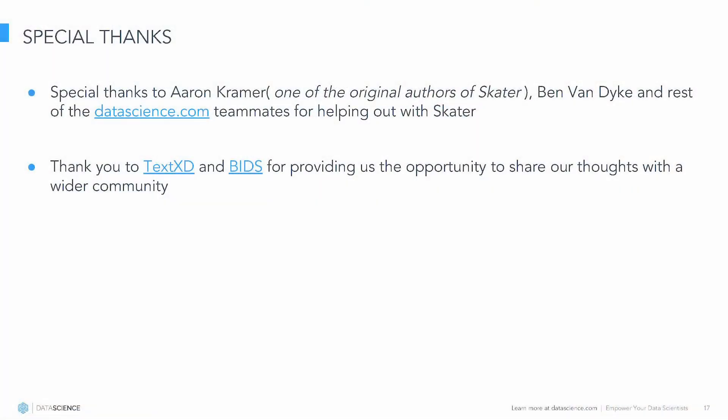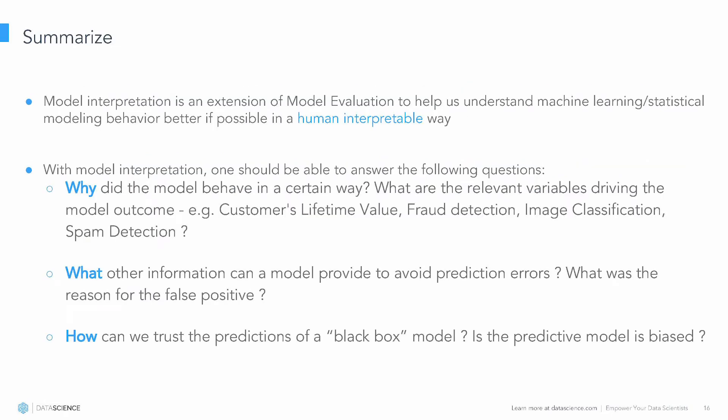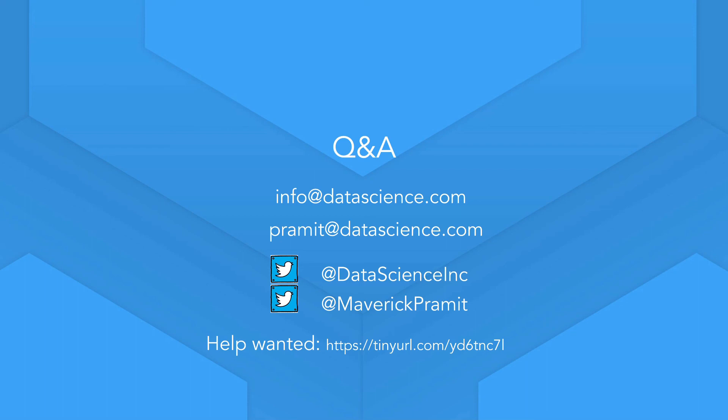I'd also like to extend a special thanks to some of my colleagues Aaron and Ben, and to TextXD for the invitation and opportunity to share our thoughts. So quickly let's summarize: why are model interpretation and evaluation techniques important? As you build sophisticated predictive models, it's not enough to just understand what features exist at the global level — we have to understand why the model behaved a certain way, what information a model can provide to identify a false classification, and how we can enable trust in this black box. Only by answering why, what, and how can we enable better model performance. With that, I'm open to Q&A. Thank you.